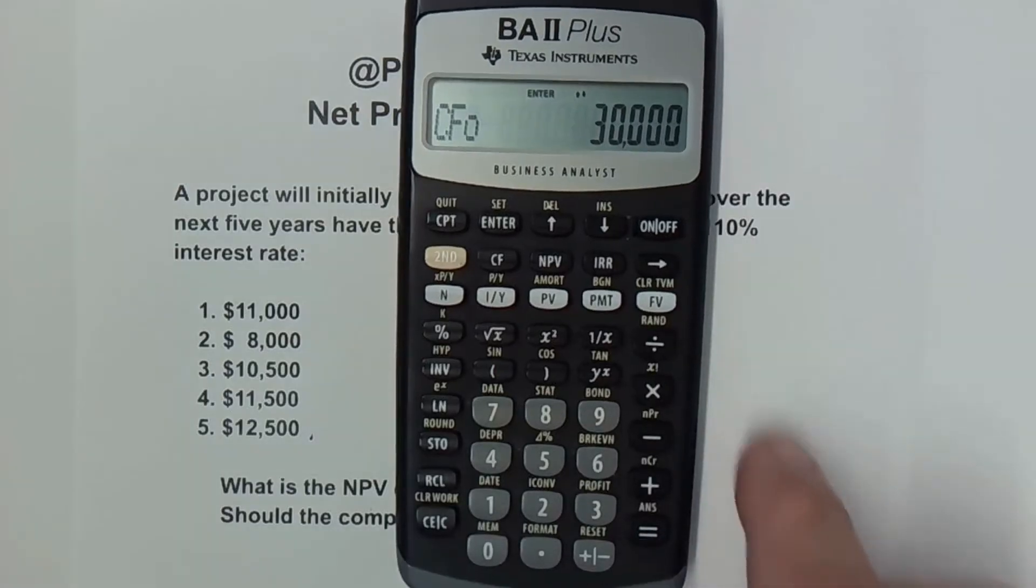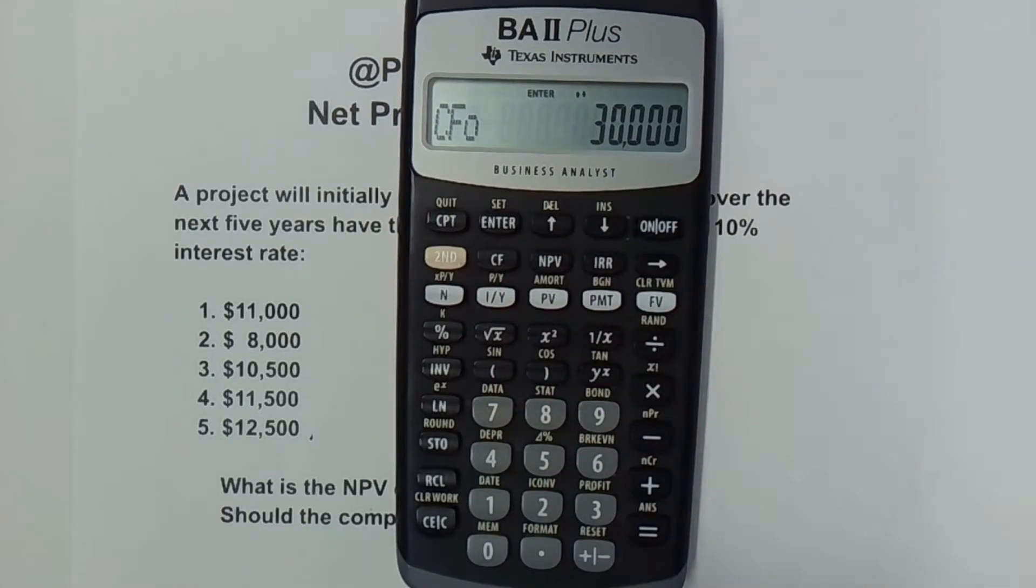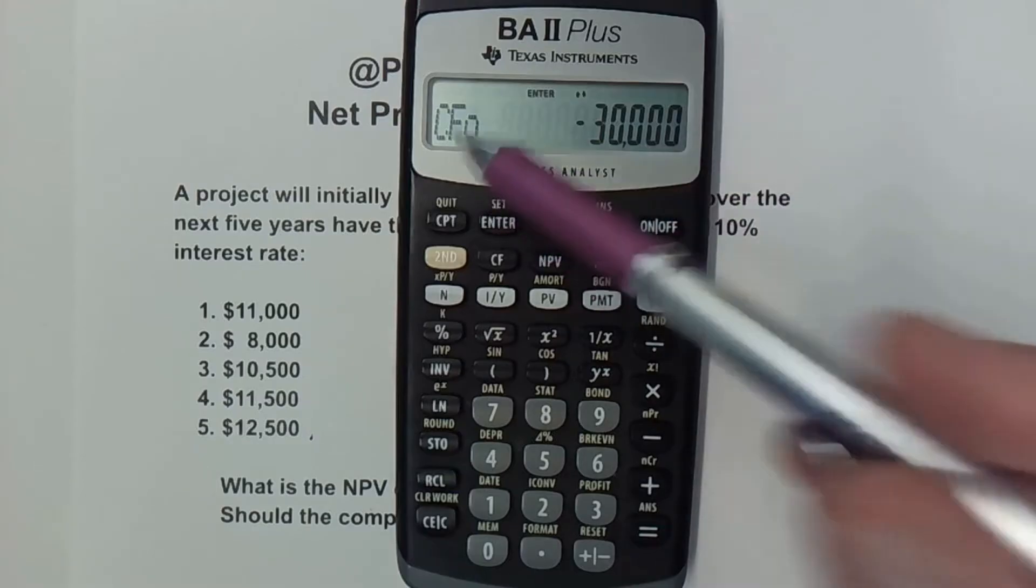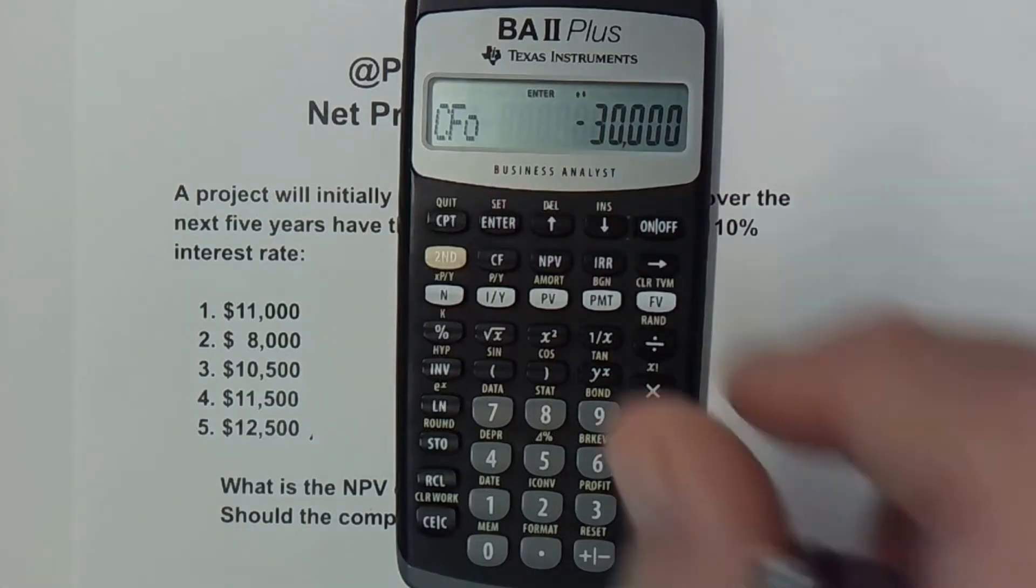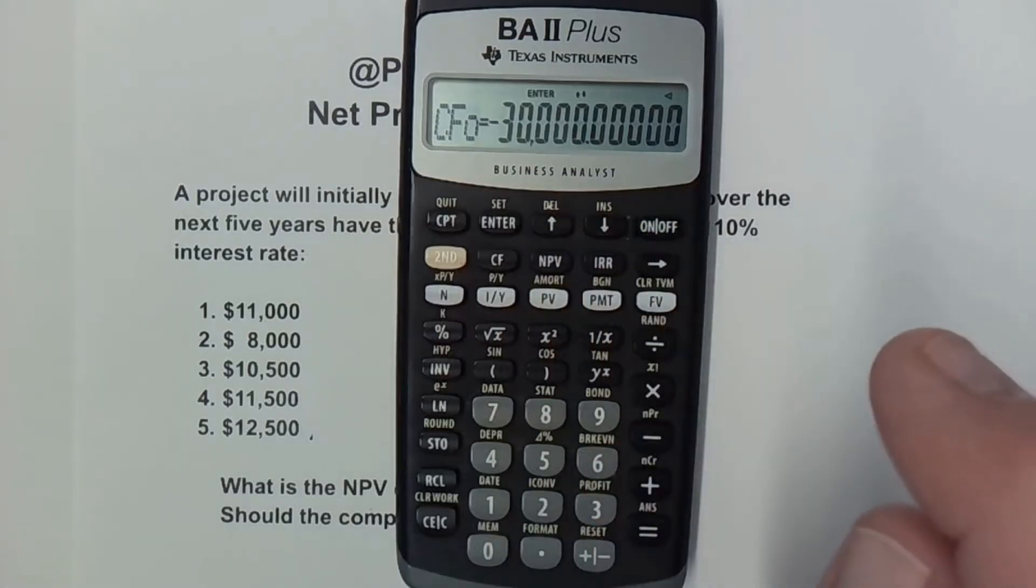So I'm going to put in 30,000. So I've got 30,000, but we're spending it. So it's going out the door to invest in this project. So I have to hit this plus minus key to make it negative. So I have negative $30,000 is my CF initial, and I hit enter. So now it's been entered.